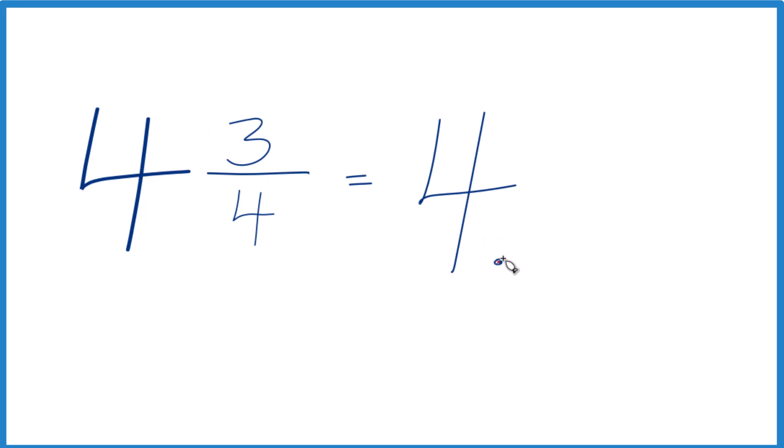And you might know that 3/4 is .75. If you know that, you're done. 4 3/4 equals the decimal 4.75.